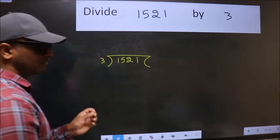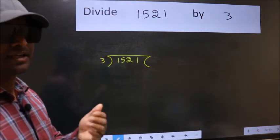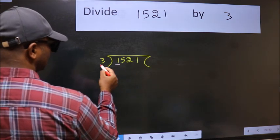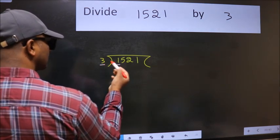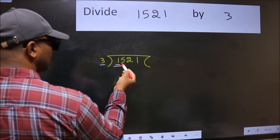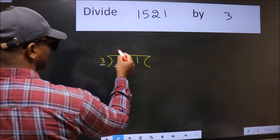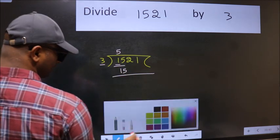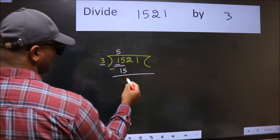This is your step 1. Next, here we have 1 and 3 here. 1 is smaller than 3, so we should take 2 numbers: 15. When do we get 15 in 3 table? 3 times 5 is 15. Now we should subtract. We get 0.